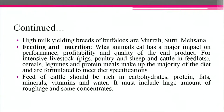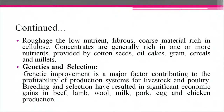What animals eat has a major impact on performance, profitability and quality of the end product. For intensive livestock — pigs, poultry, sheep, cattle and feedlots — cereals, legumes and proteins may make up the majority of the diet. Feed for cattle should be rich in carbohydrates, protein, fats, minerals, vitamins and water. It must include large amounts of roughage and some concentrates. Roughage is low-nutrient, fibrous, coarse material rich in cellulose. Concentrates are generally rich in one or more nutrients, provided by cottonseed, oil cakes, grain, cereals and millet.